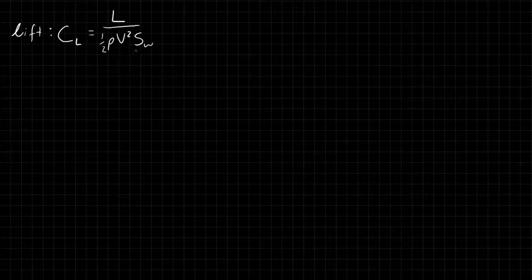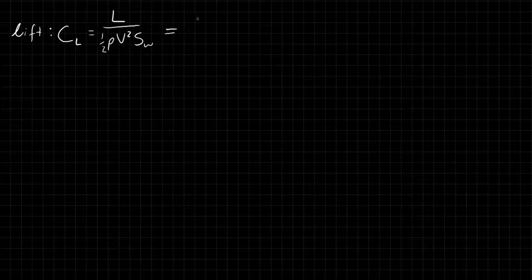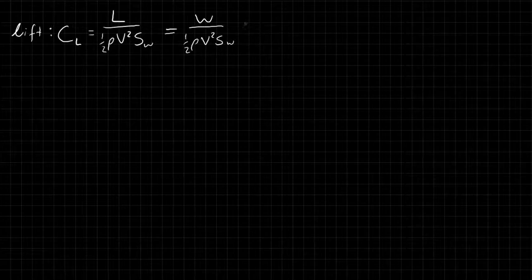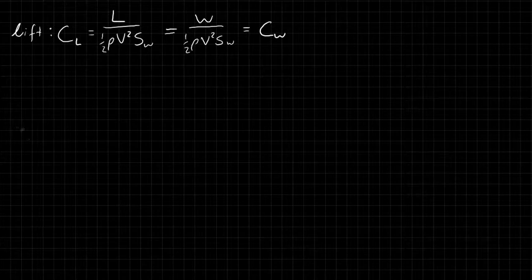In steady level flight, lift has to equal the weight, so we can equivalently write the lift coefficient as weight divided by one-half rho v-squared times S-w. We sometimes call this the weight coefficient because we've simply non-dimensionalized the weight.